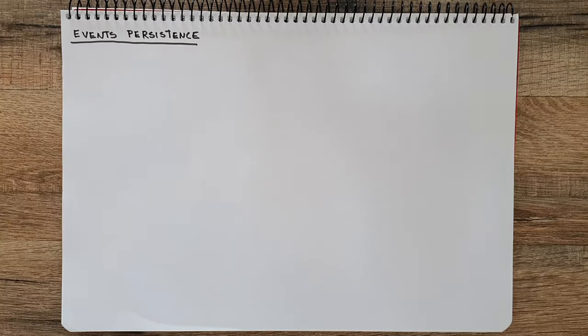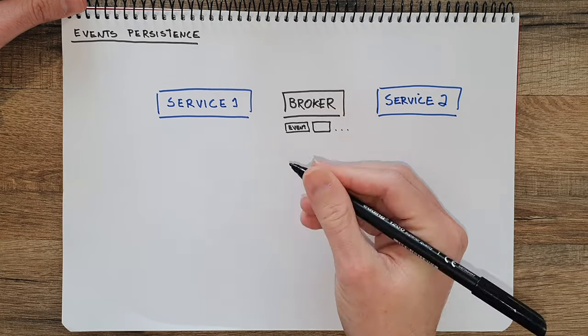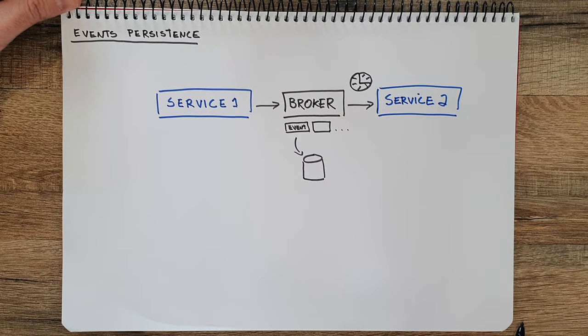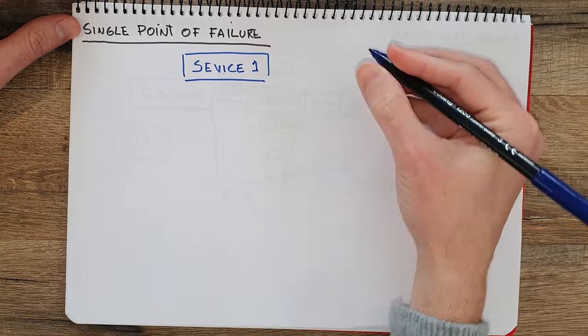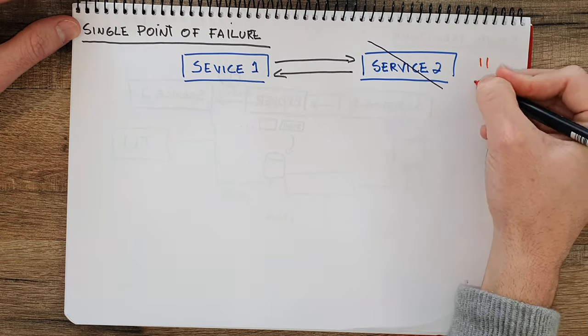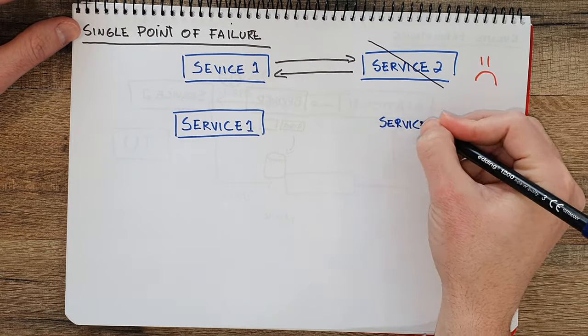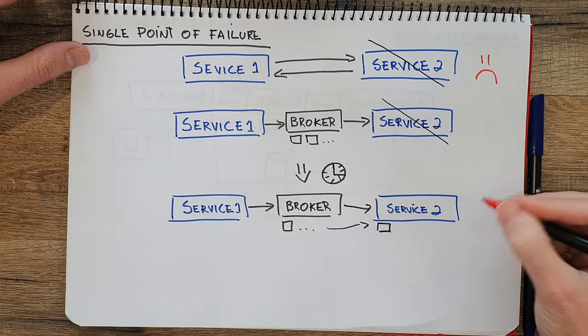Also, when you have communication using events, events can be persisted, and this way the information can be retrieved even at later stages — not only during the call, like it happens when you just make a direct call between one service and the next. There is also no single point of failure, so the system is more robust. Basically, when communicating from service1 to service2 in the regular request-response approach, you need both services to be online and active. But in an event-driven system, one of the two systems can be down. After you send the event, it will be persisted in the broker until a consumer reads it, allowing more robustness in the case of failures.